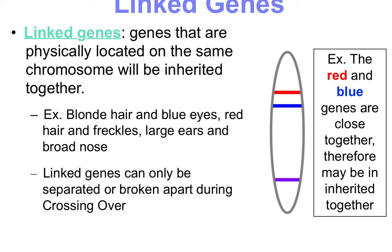A lot of genes are also linked — one has to happen before the other. Genes that are physically located on the same chromosome are usually inherited together. So if there's a blonde-haired, blue-eyed parent and a red-haired, freckled parent, those traits are located really close to each other on the same chromosome. The offspring are likely inheriting most of one chromosome from one parent, so those traits come together. We call them linked genes.